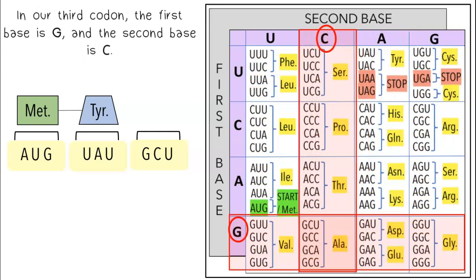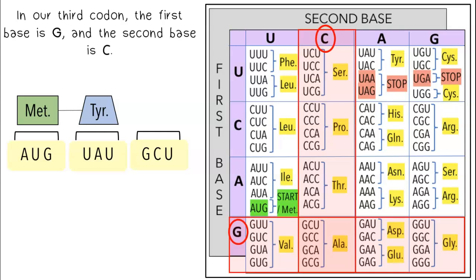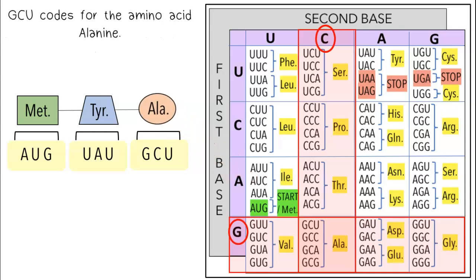In our third codon, the first base is G and the second base is C. GCU codes for the amino acid alanine.